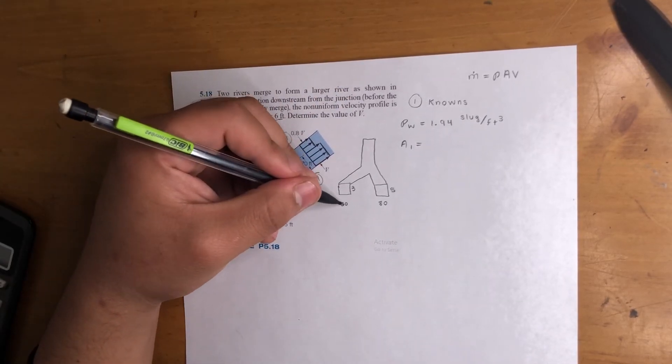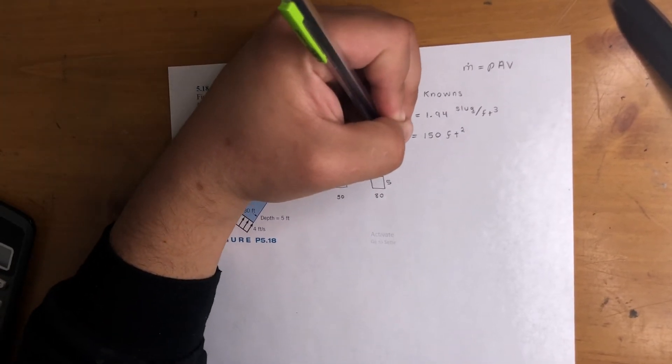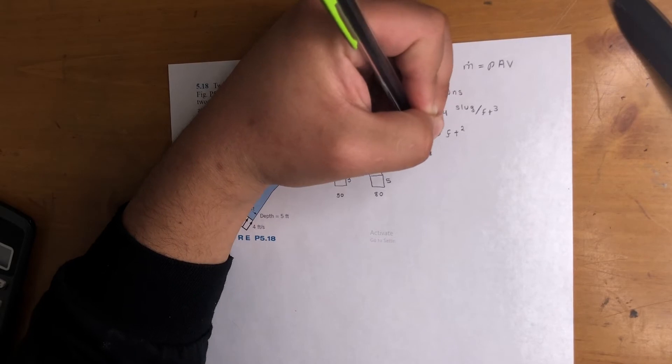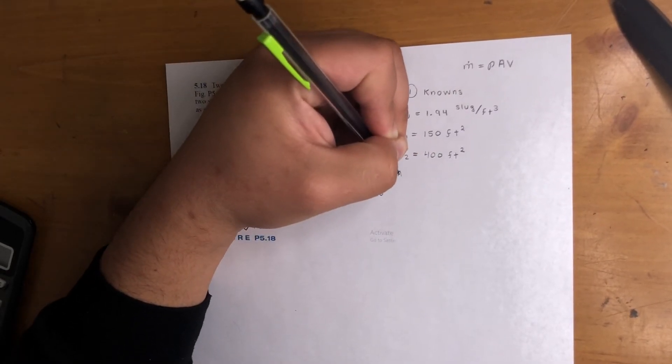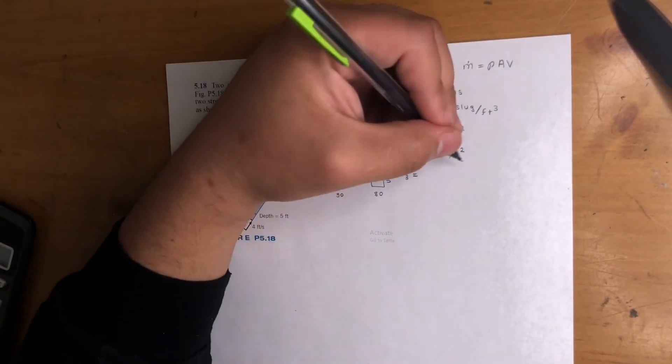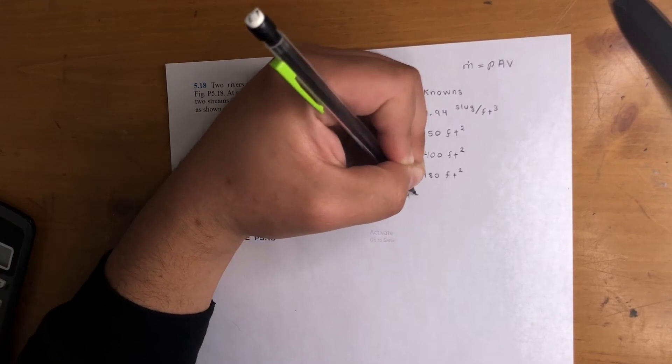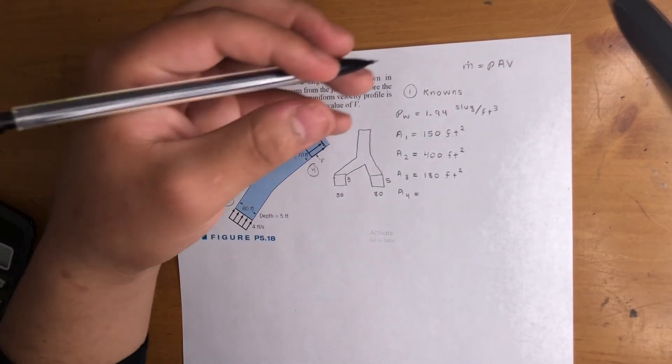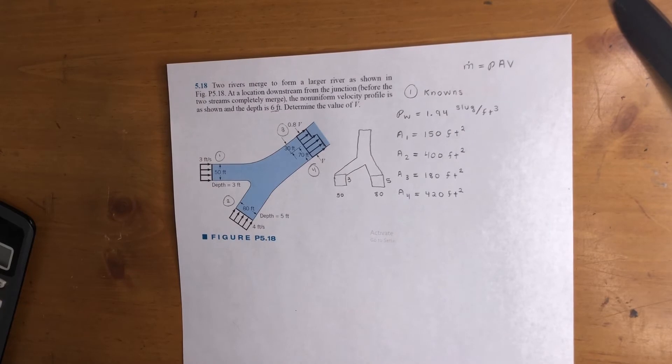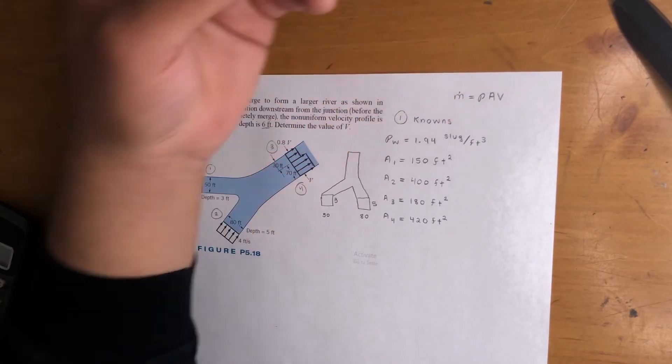Area of one is 50 times 3, that is 150 feet squared. Area of two is equal to 5 times 80, that is 400 feet squared. Area of three is 30 feet times 6, it's going in six feet, so it's 180 feet squared. A4 is 70 feet, it's going in six, so 70 times 6, that is 420 feet squared. So cool. We got the density, it's all uniform all around. Got the areas. Now we just need the velocities at each point.